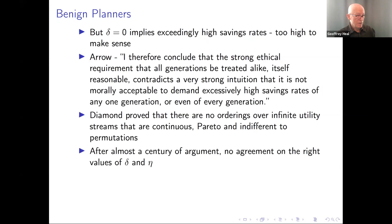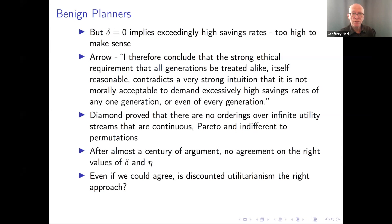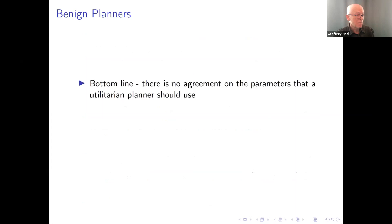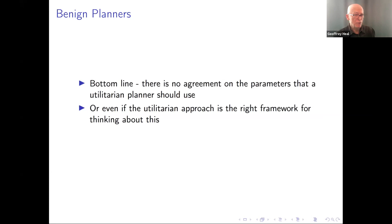After almost a century of argument since Ramsey's paper, there's still no agreement on the right values for delta and eta. And even if we could agree on those, is discounted utilitarianism the right approach? Koopmans famously axiomatized the discounted utilitarian approach in an elegant paper, but his axioms are actually quite restrictive. The bottom line is that there's no agreement on the parameters utilitarian planners should use, and there isn't even agreement that the utilitarian approach is the right framework.